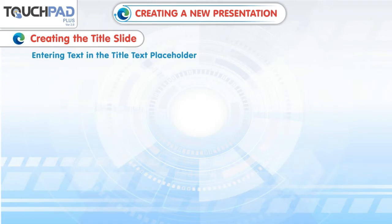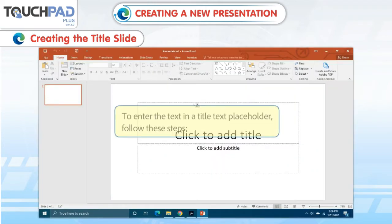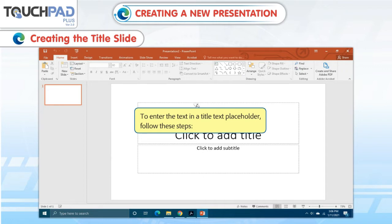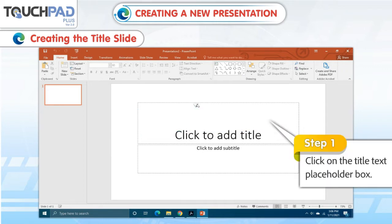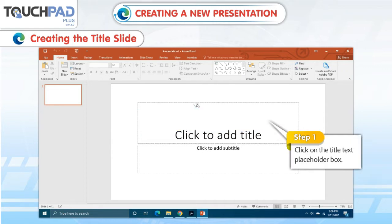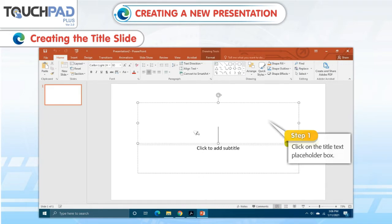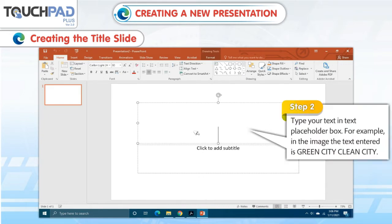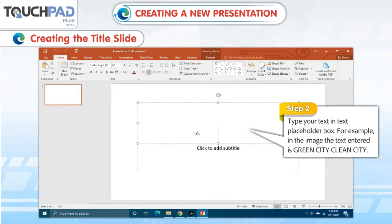Entering text in the title text placeholder. To enter the text in a title text placeholder, follow these steps. Step 1: Click on the title text placeholder box. Step 2: Type your text in the text placeholder box.